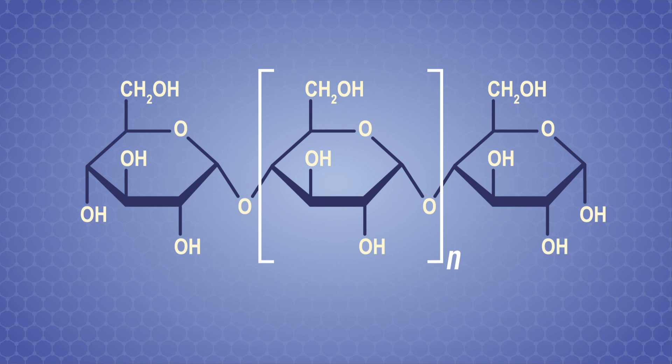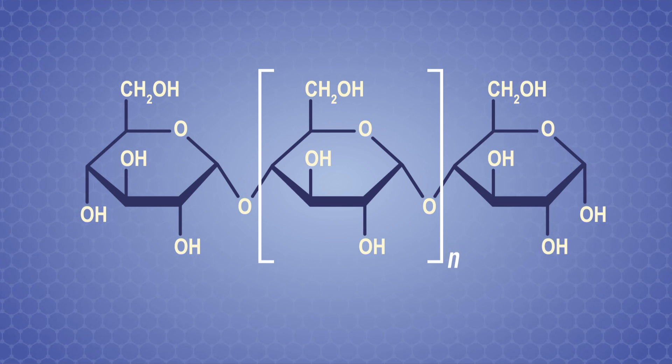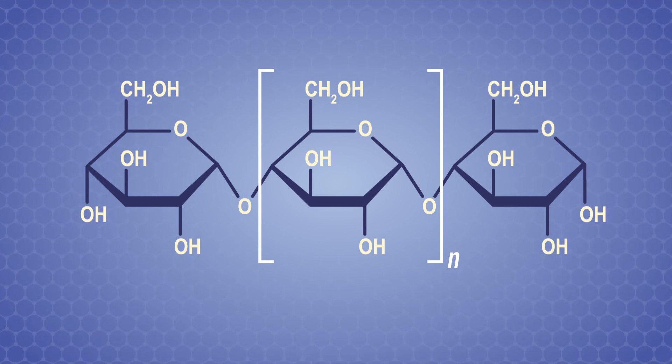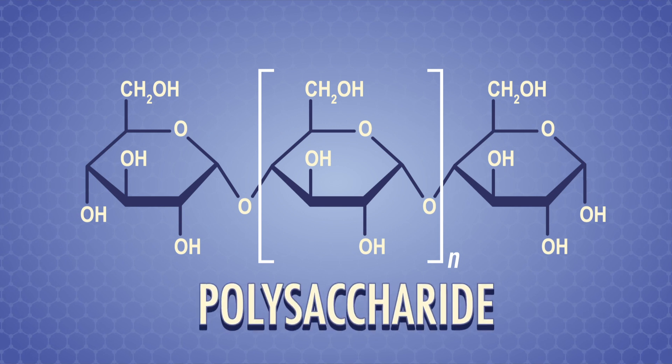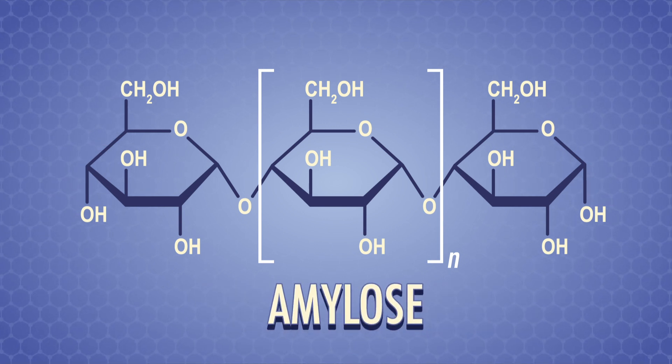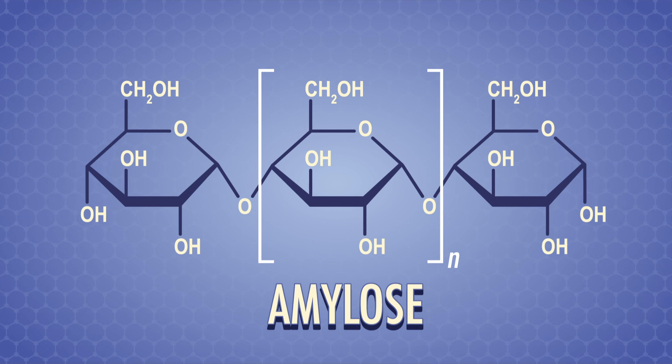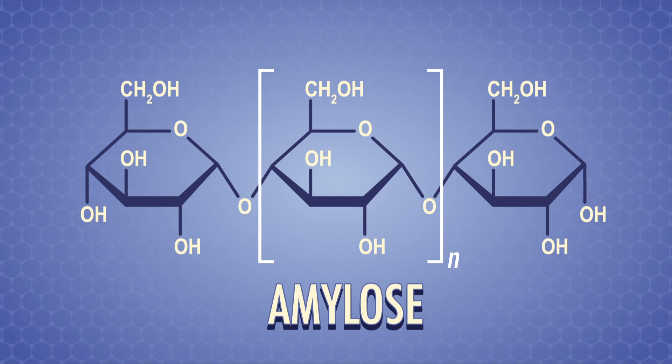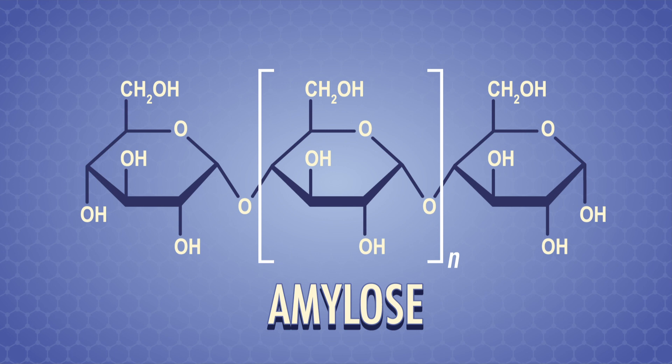Now, if we take maltose and add hundreds more alpha-1,4 glycosidic bonds with more D-glucose, we make the polysaccharide amylose. Amylose is one of the two components of starch, the main energy storage molecules in plants. These polymers can pack pretty tightly together for easy storage.